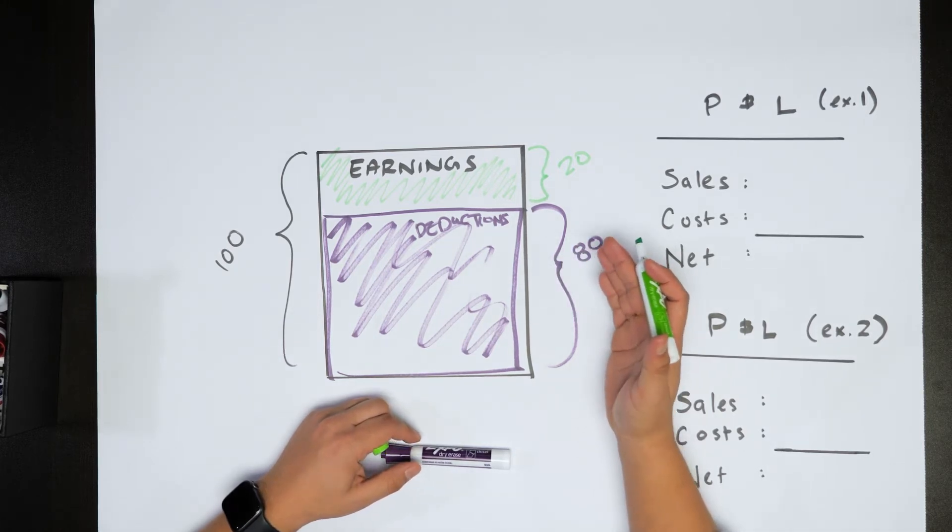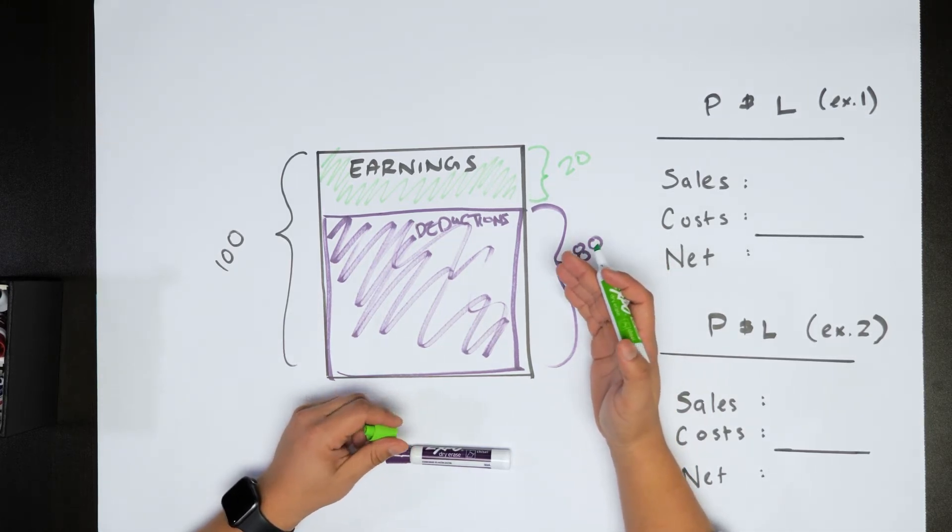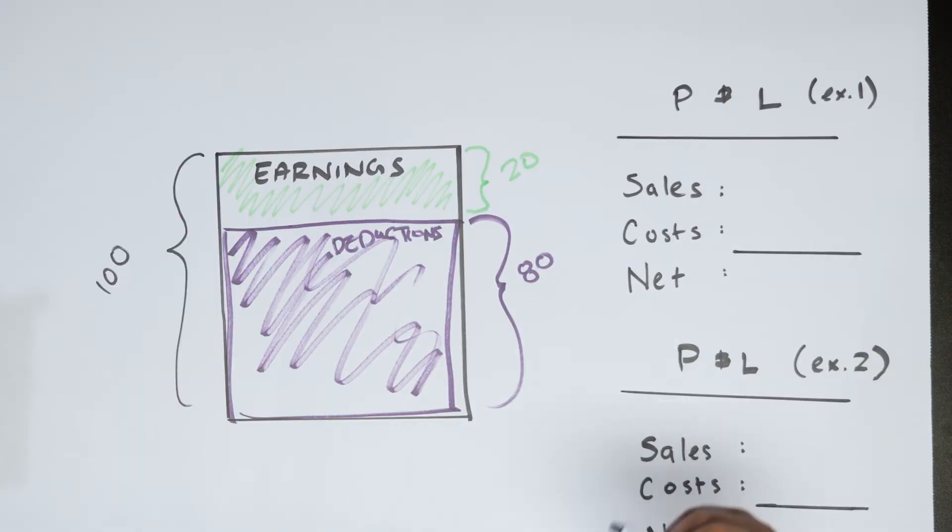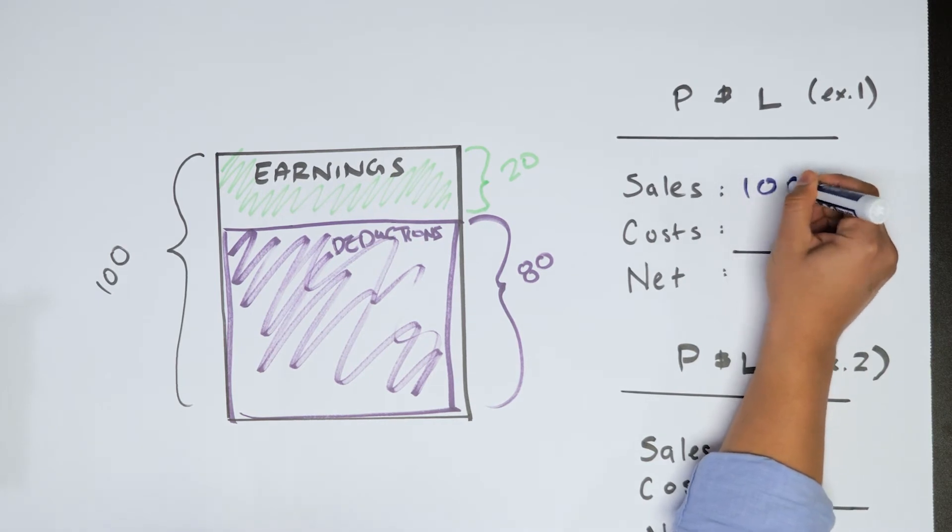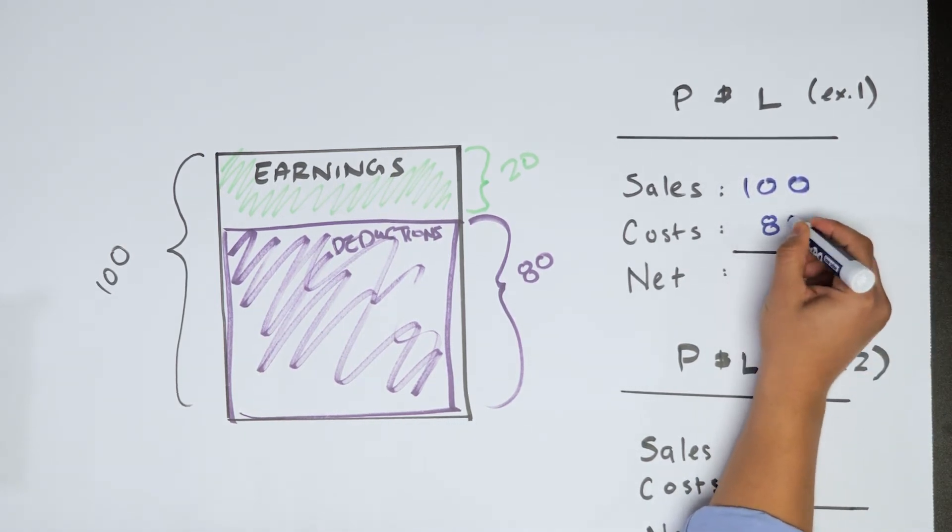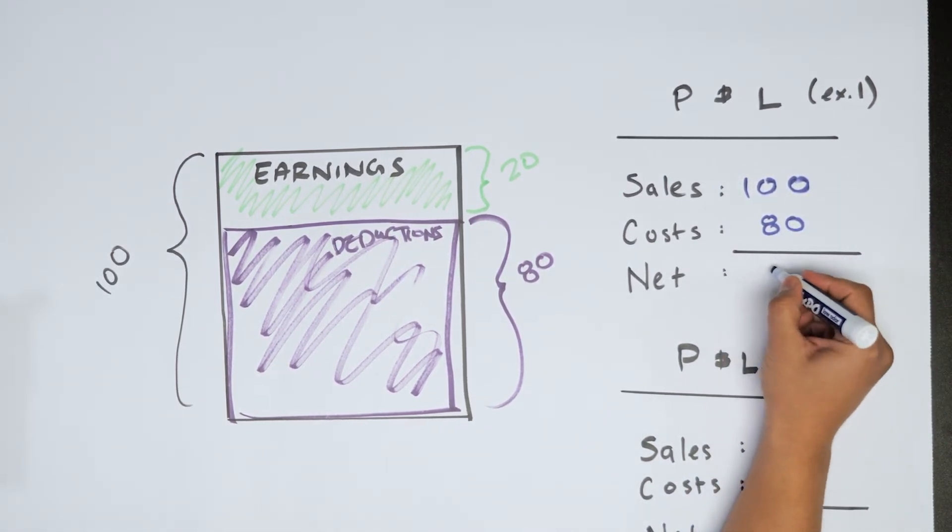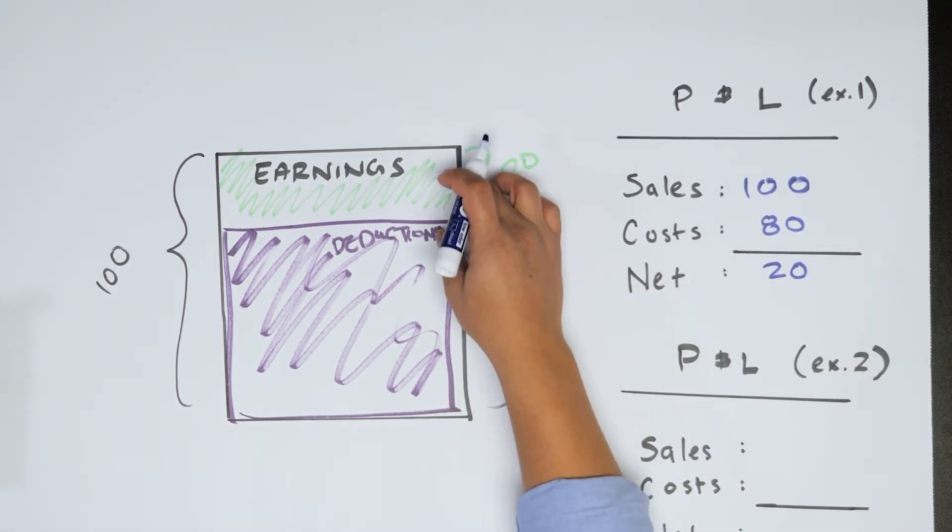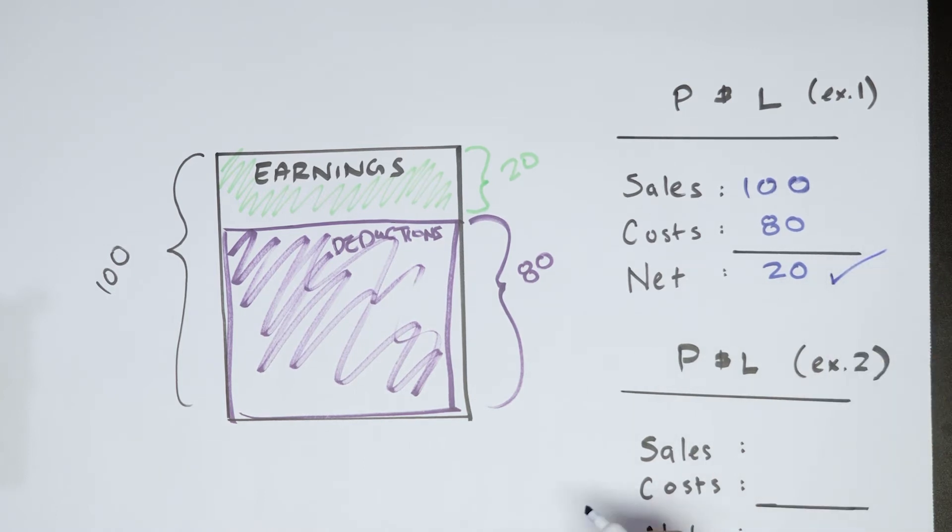Now let's get into how that's going to look like on a profit and loss statement. So if we go over to our example one, we have sales of 100, costs of 80, and we have a net profit of 20. And that all ties out here. Our profits showing up and we're good.